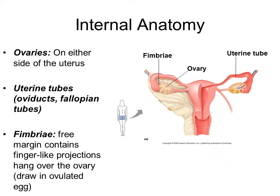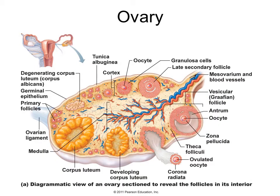There are two ovaries. Associated with them are the uterine tubes, and the fimbriae are the projections that help draw the egg into the uterine tube. In the ovary, the oocyte — which is the egg — is developing, and ultimately at ovulation it will be released.